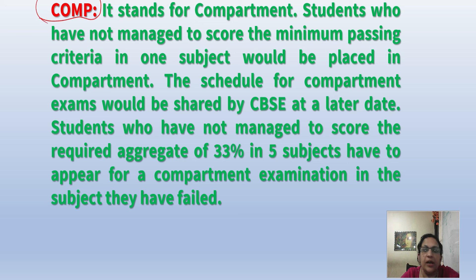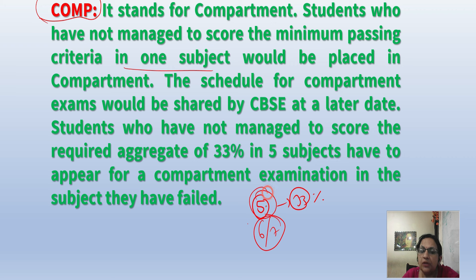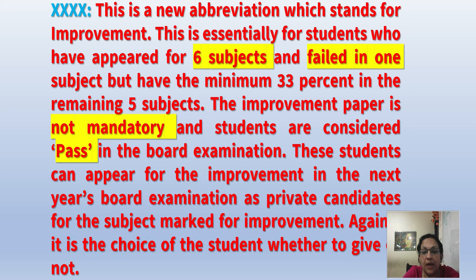Compartment, which is also called Supplementary, means students don't meet the minimum passing criteria. We need to get 33% in 5 subjects to pass overall. If I take 6 subjects and pass 5, I pass overall. In the other subject, compartment will be written. For the compartment exam, Class 10 students are allowed 2 subjects, and Class 12 students are allowed 1 subject.